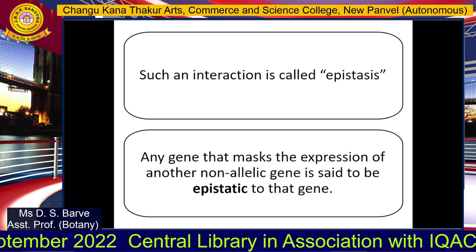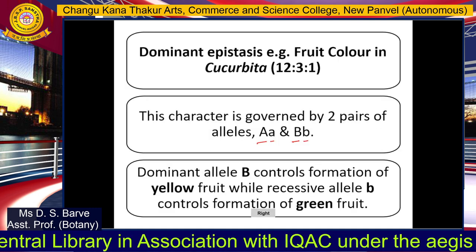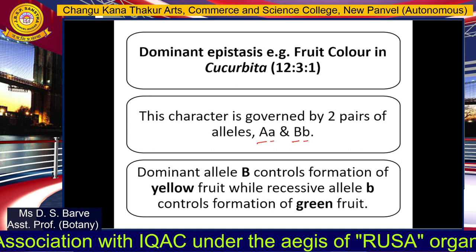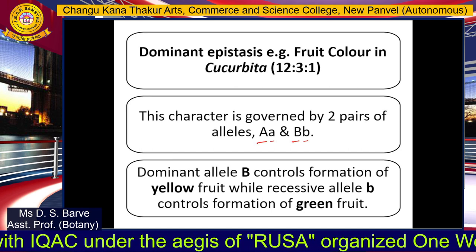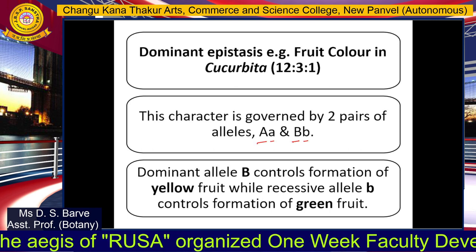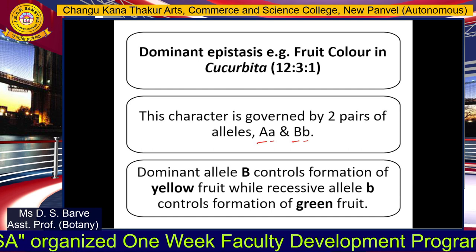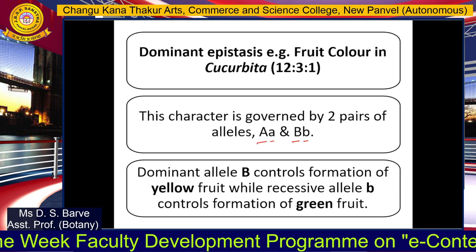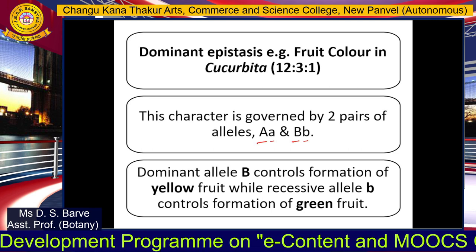There are many different kinds of epistasis. The first type we shall be studying is called dominant epistasis, which is well exemplified by the inheritance of fruit color in Cucurbita. Here the F2 ratio gets modified to 12:3:1, meaning the basic original Mendelian dihybrid ratio of 9:3:3:1 changes to 12:3:1.